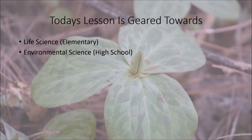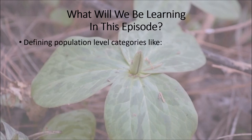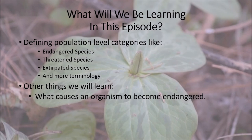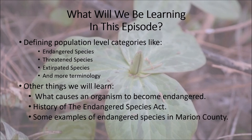Today's lesson is geared towards life science for elementary students and environmental science for high school students. We're going to be defining population level categories like endangered species, threatened species, extirpated species, and other terminology. We'll also be learning what causes an endangered species to become endangered, the history of the Endangered Species Act, and some examples of endangered species that we have in Marion County.